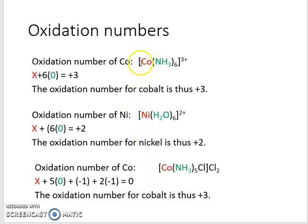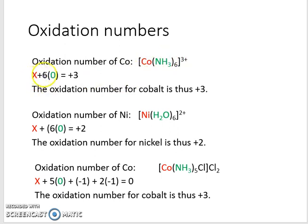Very similarly we can get the oxidation state for the cobalt. We have six of these amine ligands, so it's hexa amine, and they have a charge of zero. So x is our cobalt — the unknown — and we have six of the amine ligands. It is equal to plus three, the charge of our complex, so the oxidation state of the cobalt can thus be calculated to be plus three.